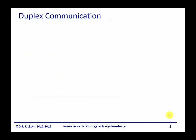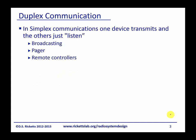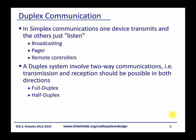In a simplex communication, one device transmits and the other just listens. An AM radio is an example of a simplex communication system, or a pager or remote control, where you just have one transmitter and the receiver does not transmit back to you. A duplex system involves two-way communication between two devices — both transmission and reception. You can have full duplex where both talk back and forth, and half duplex where maybe one can only partially do communication.